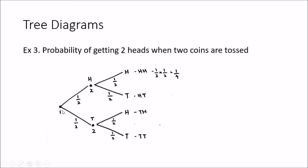Looking at the tree diagram, there are four branches: head-head, head-tail, tail-head, and tail-tail. We want the probability of getting two heads, which corresponds to only one branch. In a tree diagram we multiply the individual probabilities along that branch: one half times one half equals one over four. So there is a 0.25, or 25%, probability of getting two heads when two coins are tossed.